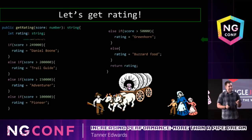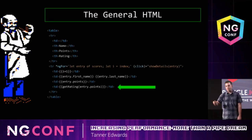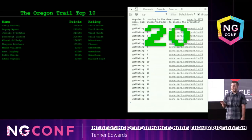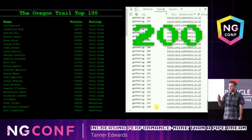Just for fun, let's add a console.count inside of this function to tell us how many times this function gets called. Finally, we take our rating function, put it into our template, and we're ready to go. So we fire up our app, and everything looks fine, but we notice that our function got called 20 times. If we switch to show the top 100 rows, we see our function gets called 200 more times.